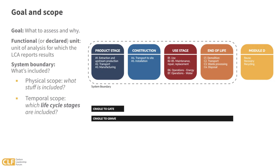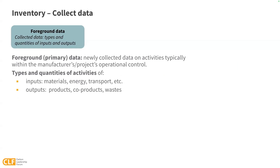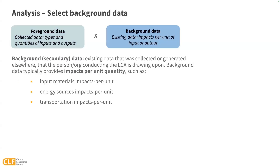An LCA's foreground, or primary data, is what's collected for this particular study, and typically covers items within the manufacturer's or project's operational control. This generally means the types and quantities of inputs — including materials, energy, and other processes like transport — and outputs, including products, co-products, and wastes. An LCA's background, or secondary data, is existing data that was collected or generated elsewhere that the person conducting this LCA is drawing upon. Background data typically provides impacts per unit quantity of the various inputs and outputs.